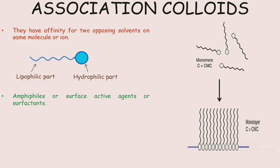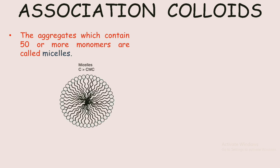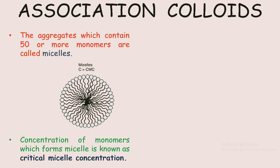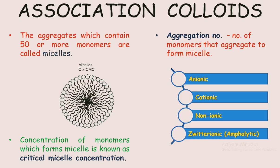At higher concentration, these monomers form aggregates whose diameter is of the order of 50 angstroms, and are thus designated as colloidal. These aggregates, which contain 50 or more monomers, are called micelles. They form a spherical structure and show affinities for opposing solvents. The concentration of monomers required to form a micelle is known as the critical micelle concentration (CMC). The number of monomers that aggregate to form a micelle is known as the aggregation number. Amphiphiles may be anionic, cationic, nonionic, or ampholytic (zwitterionic) in nature, and this provides a conventional means of classifying association colloids.